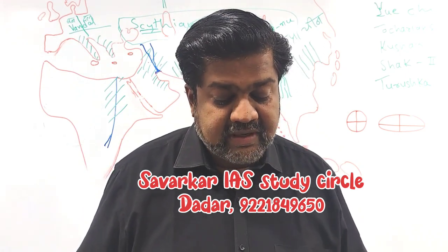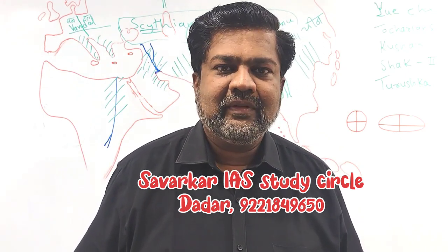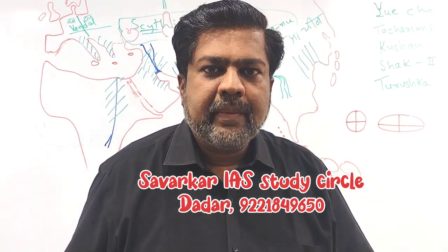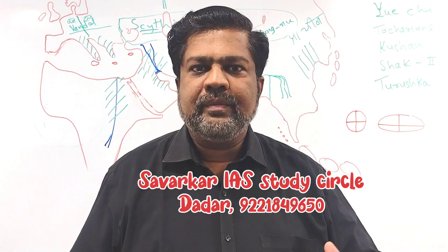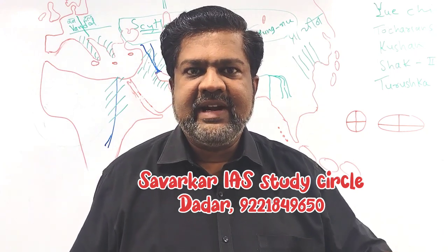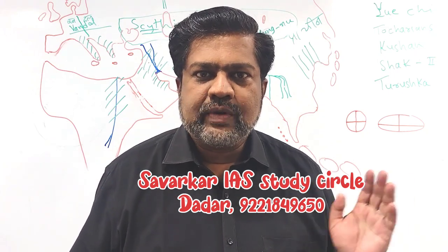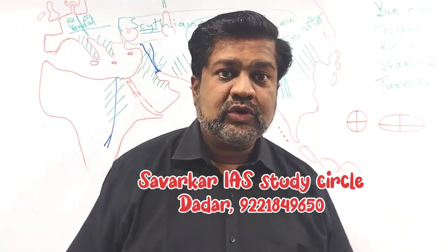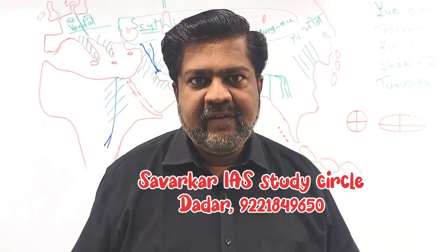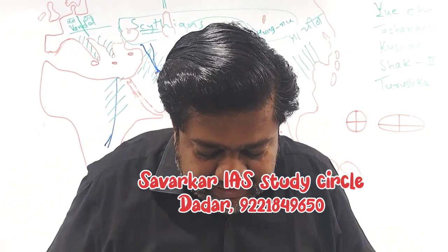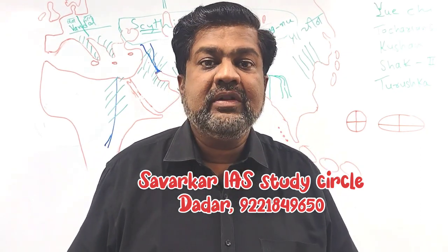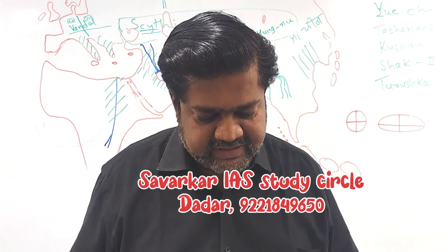Statement 2: 10 decimeters is greater than one meter. 'Deci' means one-tenth, so a decimeter is one-tenth of a meter. Therefore 10 decimeters equals exactly 1 meter — it cannot be greater than 1 meter. So this statement is also false. Both statements are false, so the correct answer is option D.